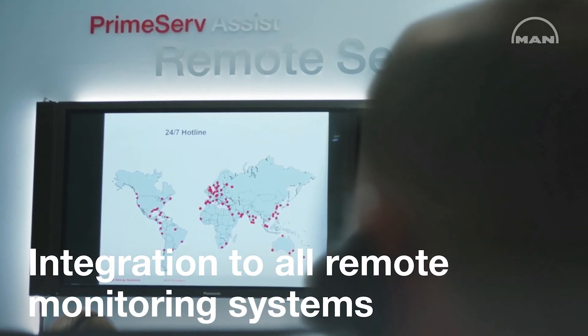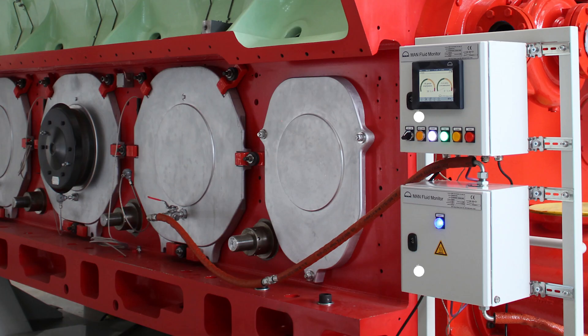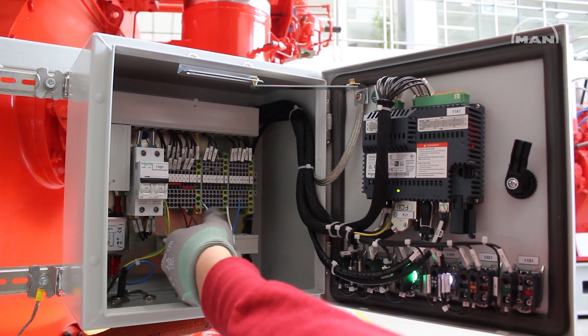This system can be integrated into the Prime Serve Assist package. MAN fluid monitor includes two panels: one for sensors, one for the index. As a plug and play solution.